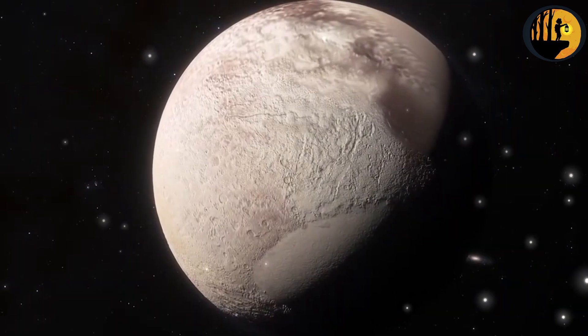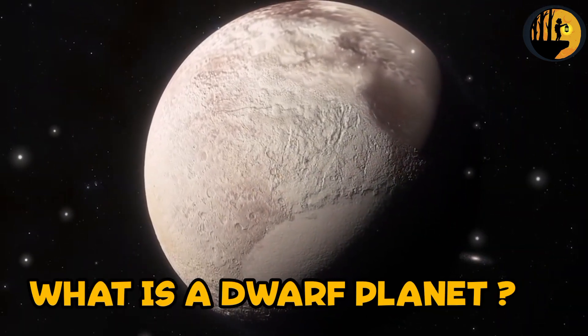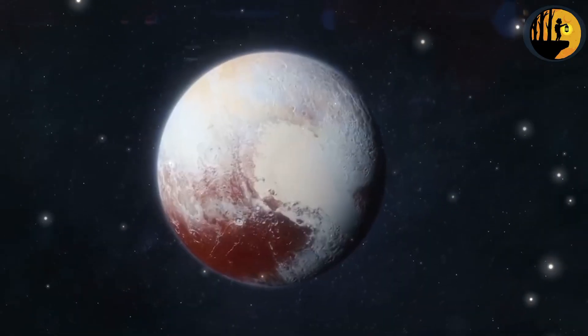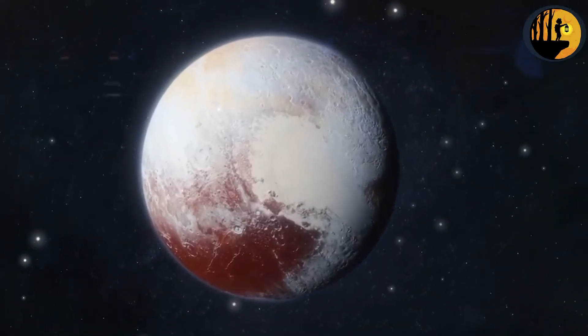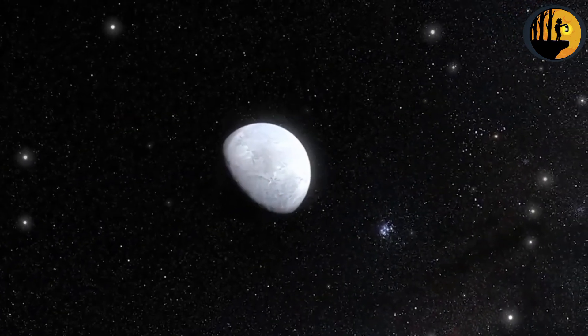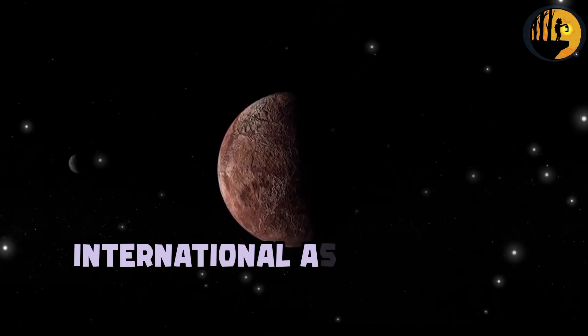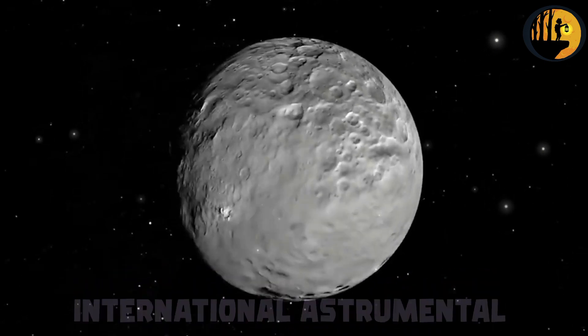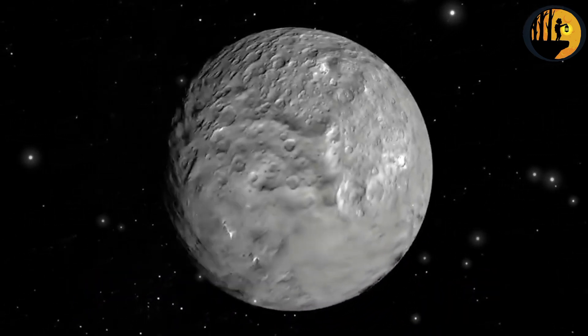But first things first. What is a dwarf planet? A dwarf planet is a type of celestial body that orbits the sun, similar to a planet, but with distinct characteristics that set it apart. According to the International Astronomical Union IAU definition, a dwarf planet is a celestial object that orbits the sun, is spherical in shape, but has not cleared its orbit of other debris.